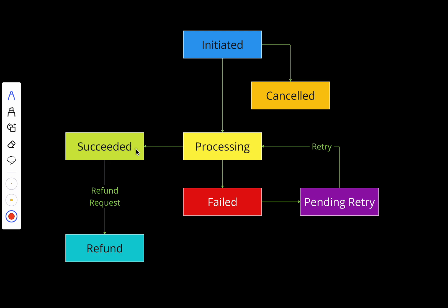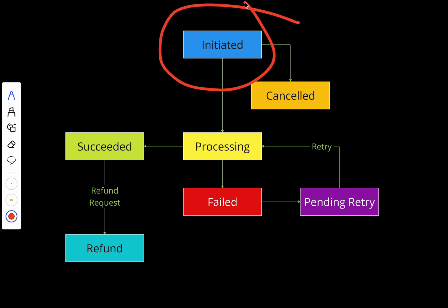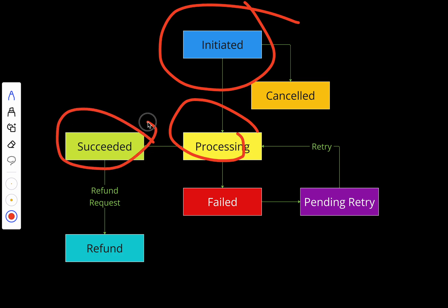Here are common statuses you might encounter. First we have Initiated — the payment request has been received but isn't processed yet. Next we have Processing — the payment is in progress with the gateway. Next we have Succeeded — the payment is completed successfully. And we have Failed — the payment attempt failed for some reason.